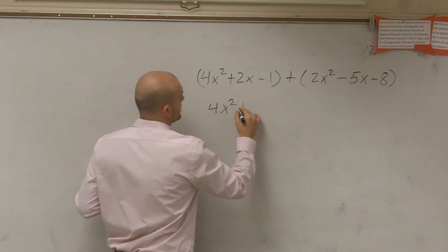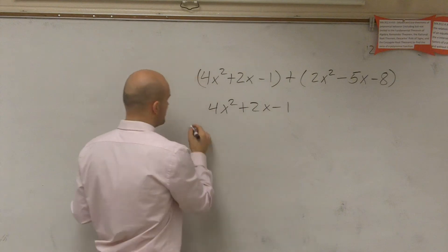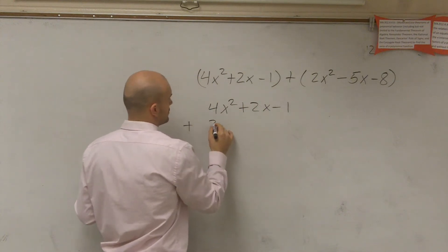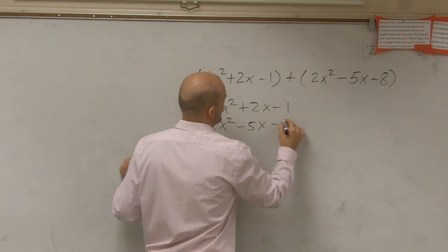So all you're going to do is write 4x² + 2x - 1 plus 2x² - 5x - 8.